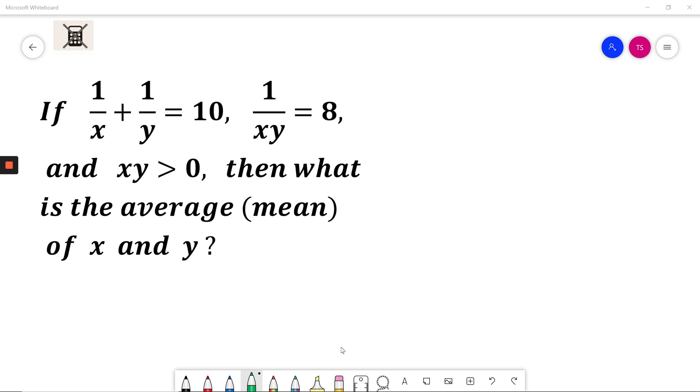If 1 divided by x plus 1 divided by y equals 10, 1 divided by xy equals 8, and xy is more than 0, then what is the average mean of x and y?